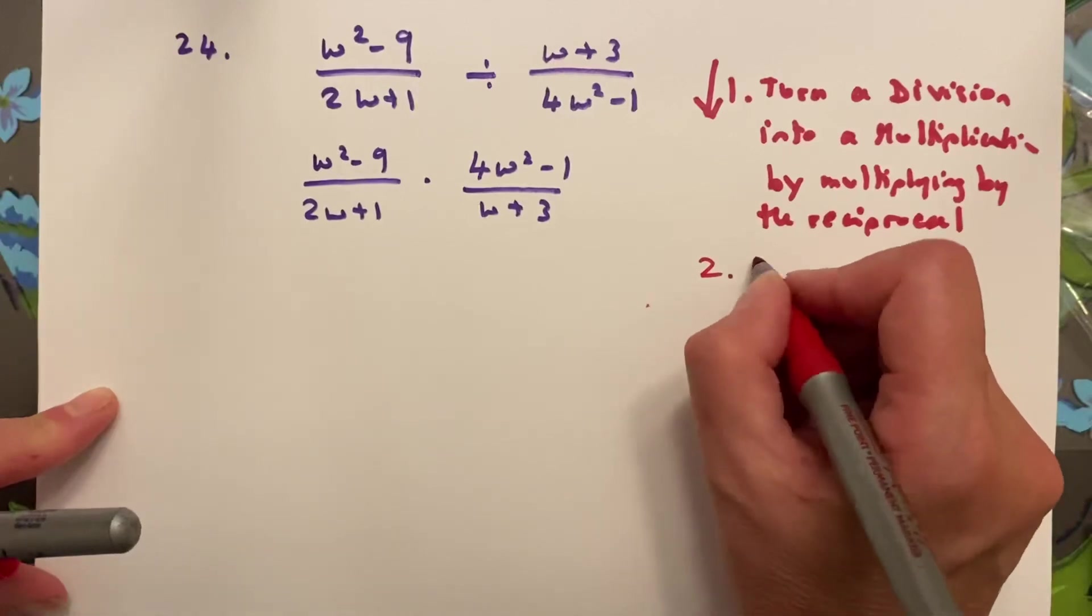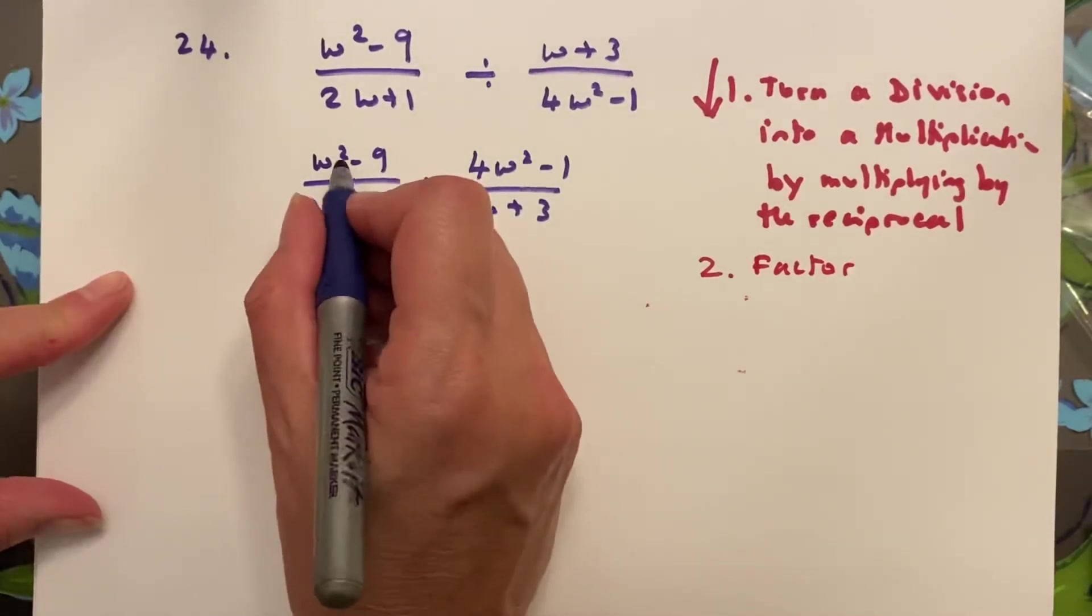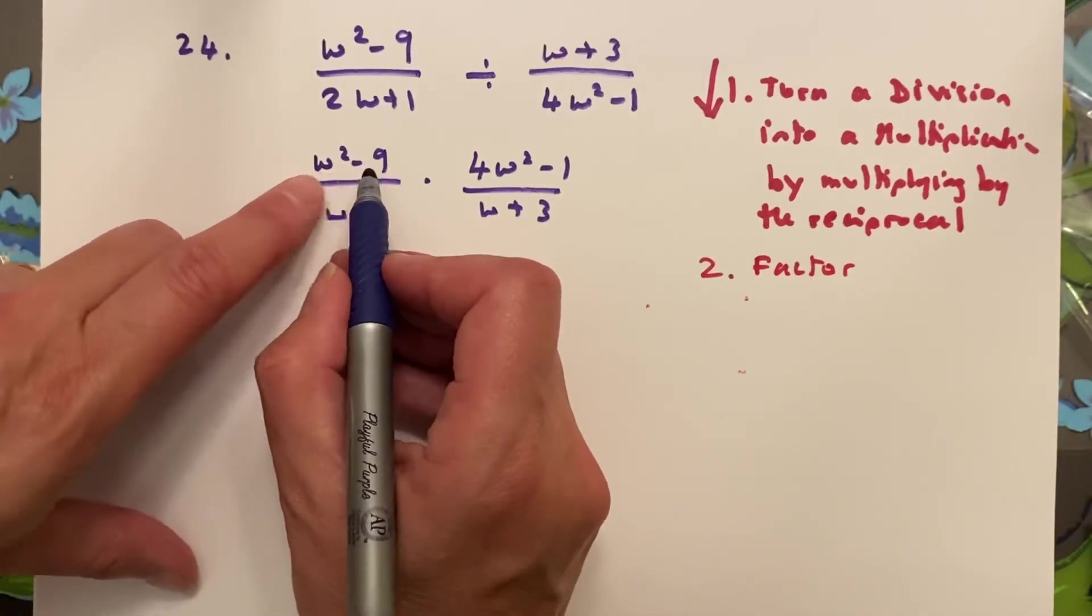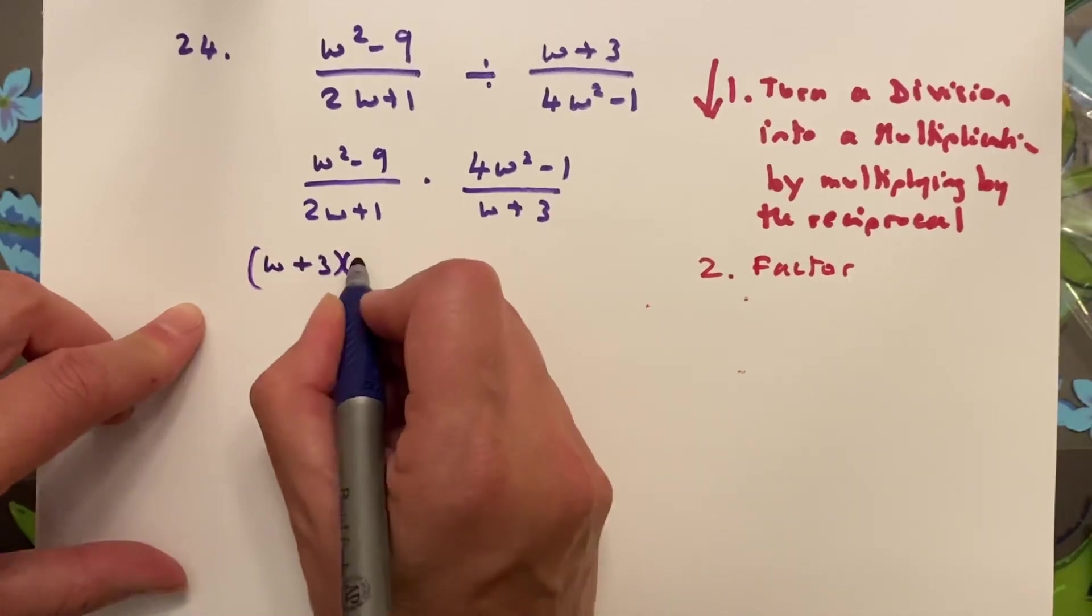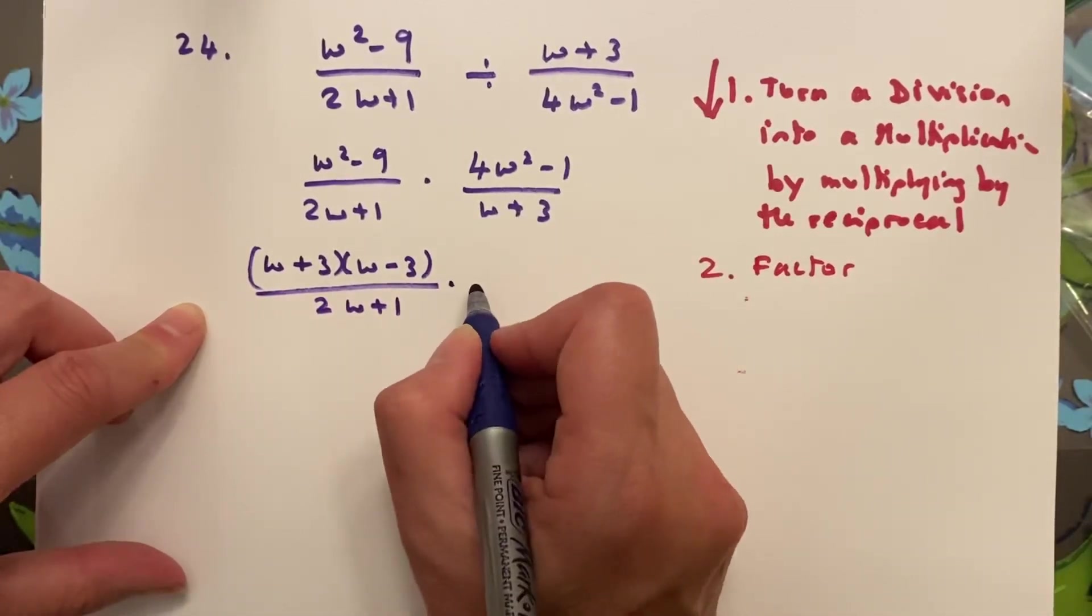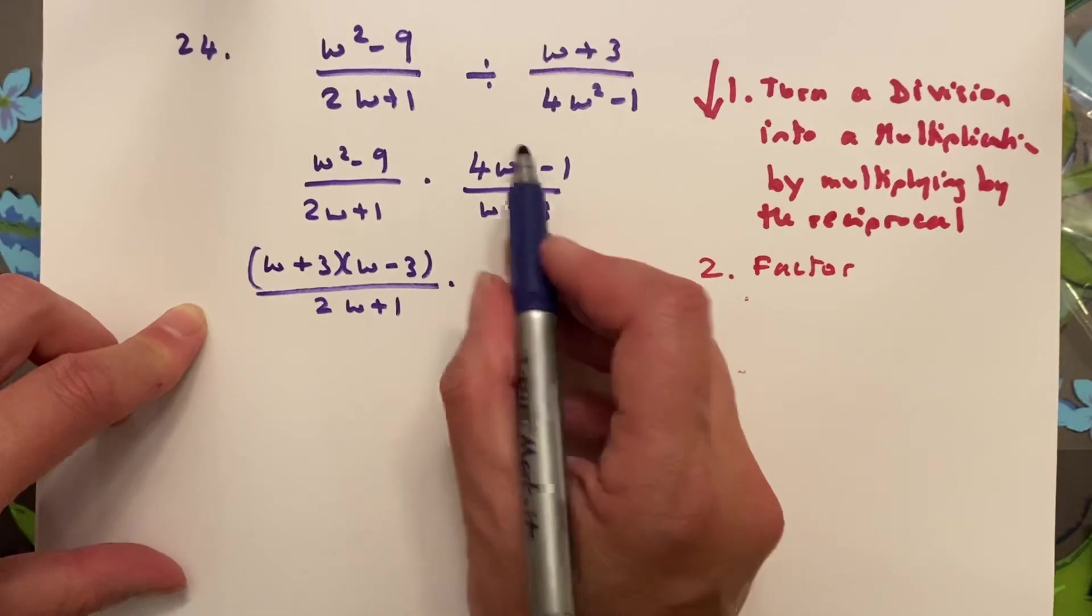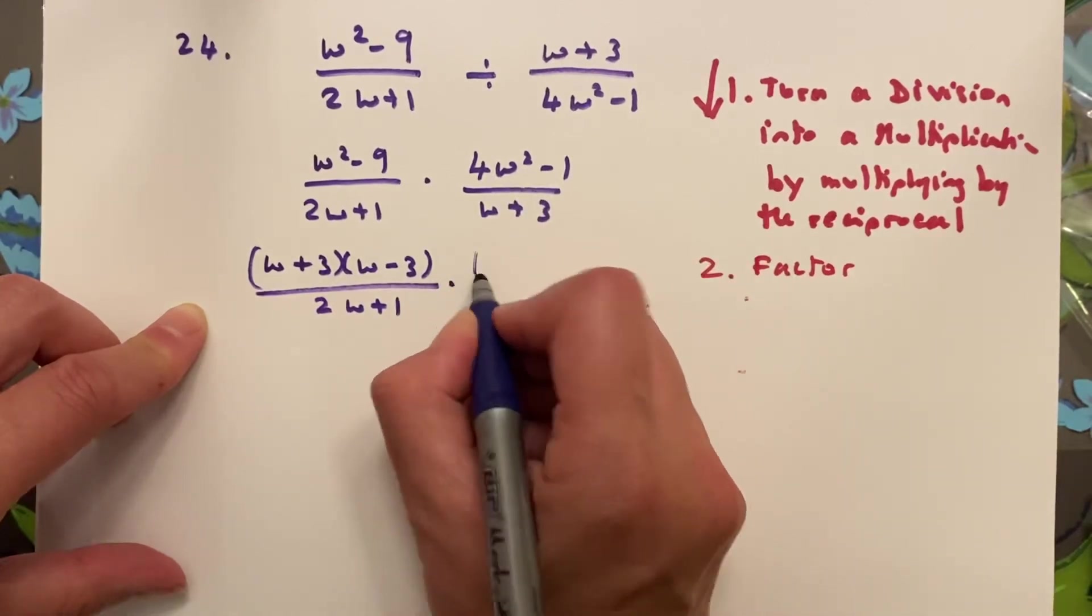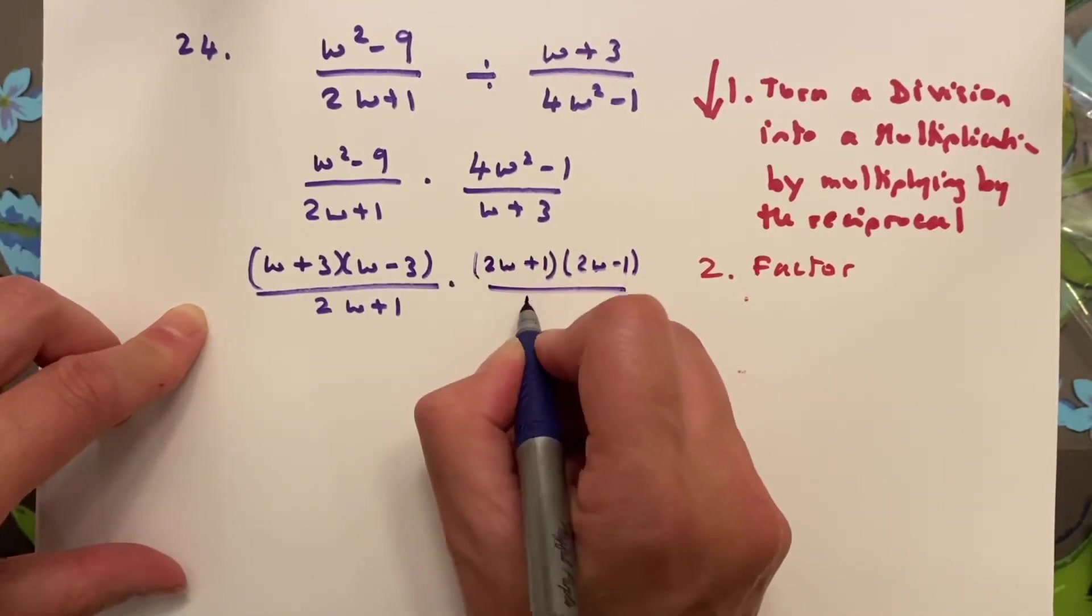So I'm going to start with w squared minus 9. I can see that w squared is a square, 9 is a square, and they're subtracted, so difference of two squares, which means w plus 3, w minus 3 over 2w plus 1. Times - and up here I don't know if you can see 4w squared, but 4w squared is the square of 2w, so I've got 1 square and 1 squared is 1. So again I have a difference of two squares, so I get 2w plus 1, 2w minus 1 over w plus 3.